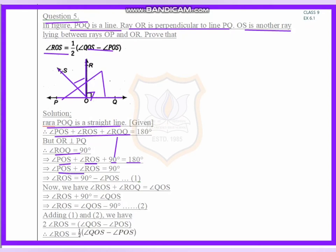Then angle POS plus angle ROS, 90 on another side becomes negative, so 180 minus 90 is 90. Now I can say angle ROS equals 90 minus angle POS. So this is equation 1.